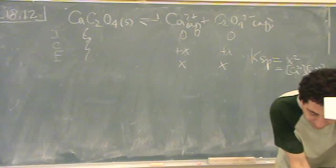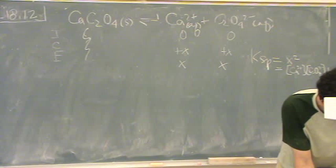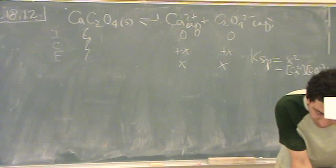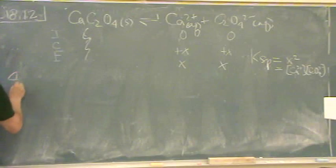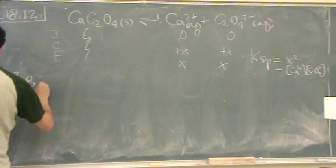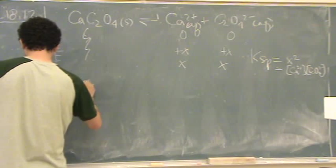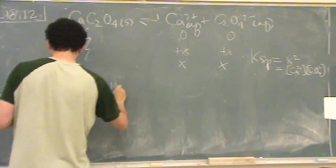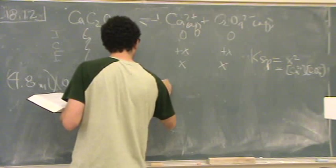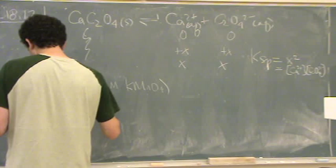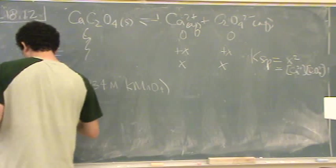Alright, so now for the titration part. You have calcium oxalate and potassium permanganate, and you have 4.8 milliliters of 0.00134 molar potassium permanganate, and then the 250 milliliter sample of the calcium permanganate.